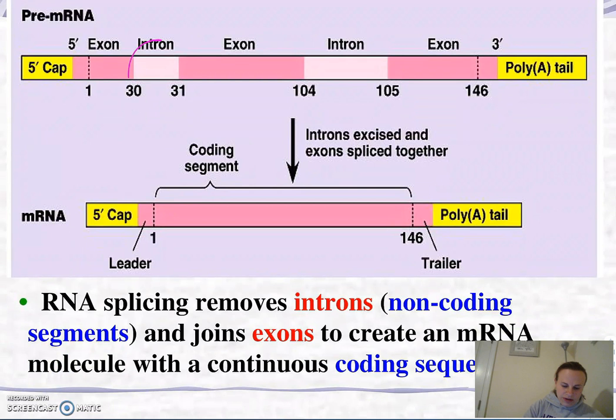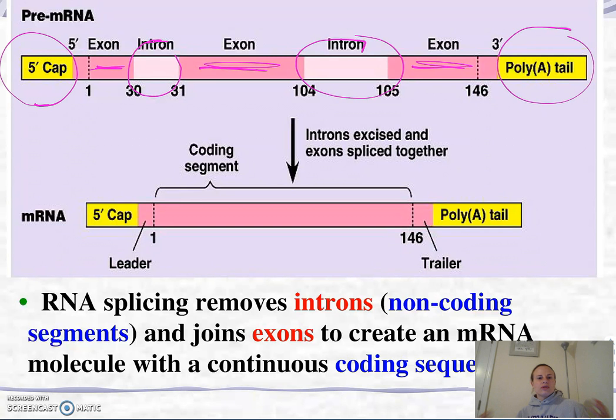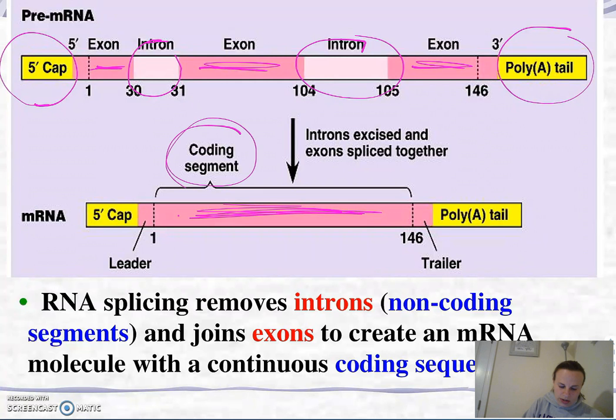You can see these sections called introns — those are non-coding regions found between exons, which contain our coding regions. We've got our poly-A tail and our cap to protect the pre-messenger RNA. Once that pre-messenger RNA goes through splicing, we only have the exons remaining, and now the exons contain the coding segment — that gives us our messenger RNA.